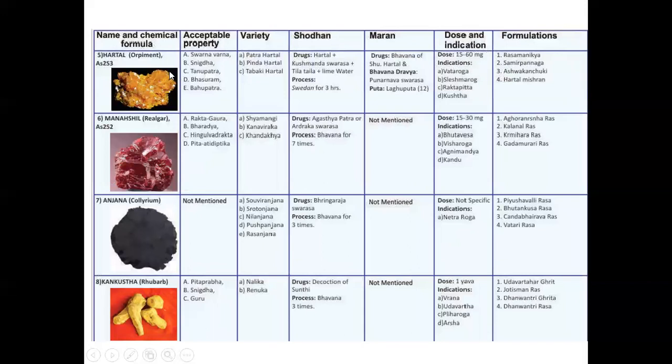Next is Hartal. Hartal and Maneshivu, these are the very poisonous or toxic type of the drugs. So be careful while handling and it should be kept always in the cupboards with the lock. This is AS2S3 and this is AS2S2. About the Hartal, Swarna Varna, this is the property Snigdha, then Tanupatra, then Vasuruna, then Bahupatra.